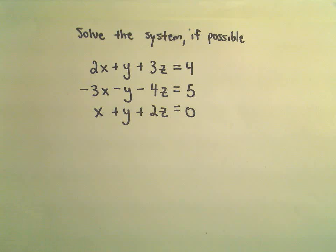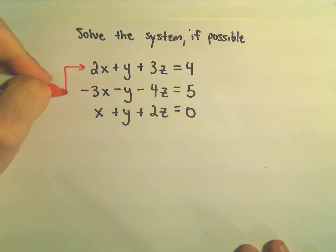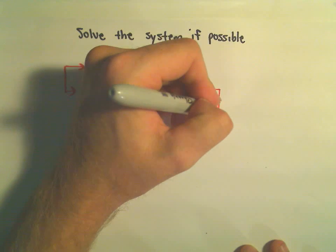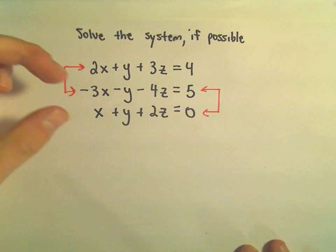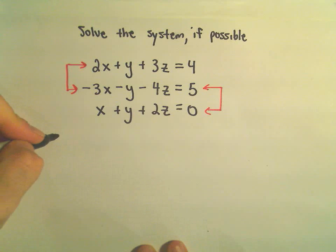To me, it looks like it's going to be easiest to eliminate the y's. I think I'm going to use the first and second equation to eliminate the y's since we have a positive y and a negative y. And then I'm going to use the second equation and the third equation for the same reason. I've got a negative y and a positive y. So that's kind of my initial strategy here to get me going.